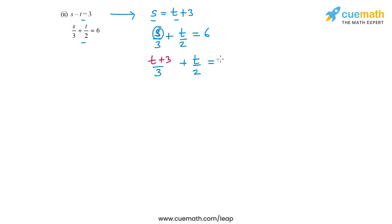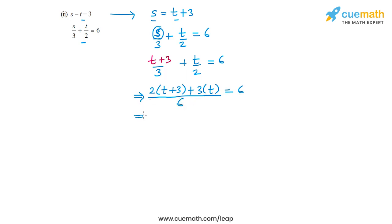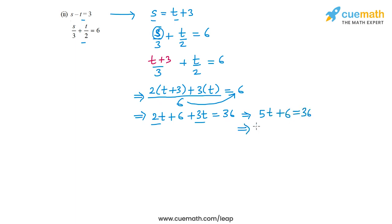So (t plus 3) by 3 plus t by 2 equal to 6. This is an equation in t alone. Cross-multiplying by 6, we get 2(t plus 3) plus 3t equal to 36, which gives 2t plus 6 plus 3t equal to 36, or 5t plus 6 equal to 36, or 5t equal to 30, or t equal to 6.